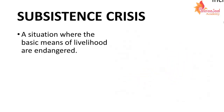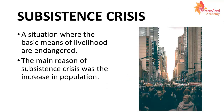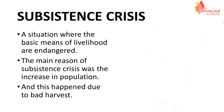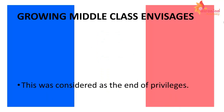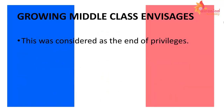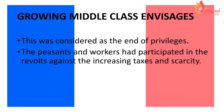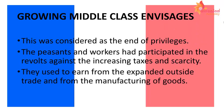Subsistence crisis वो situation होती है जब basic means of livelihood danger में आ जाता है। Subsistence crisis का main reason था population growth और bad harvest। जब ये सारा हुआ, middle class ने revolts करने start कर दिए। और ये वो time था जब privileges का end हुआ। इन revolts में peasants और workers ने participate किया। ये लोग prayer goods को manufacture करके पैसे कमाते थे, लेकिन सरकार इनकी कोई help नहीं करती थी, उल्टा उनसे tax लेती थी।